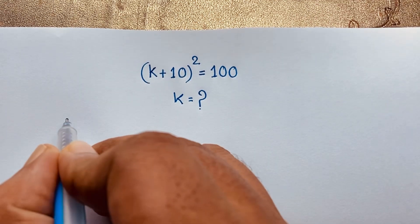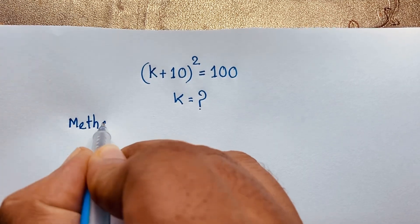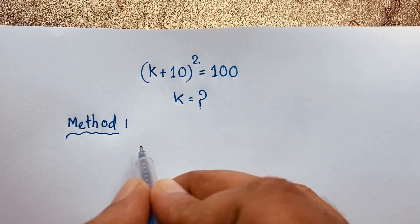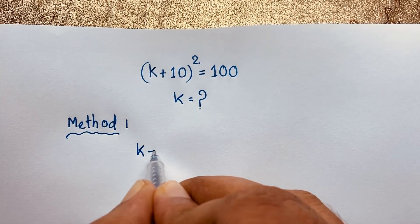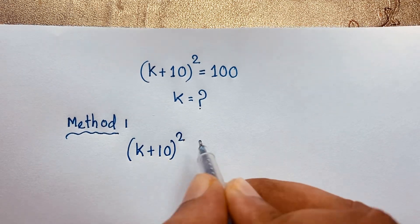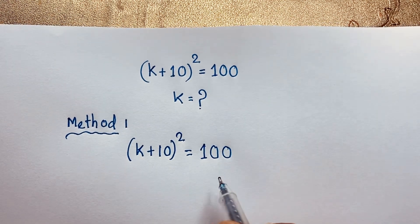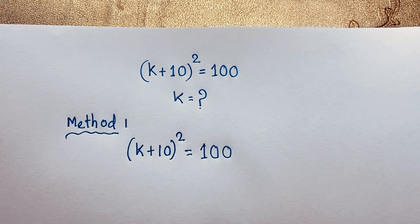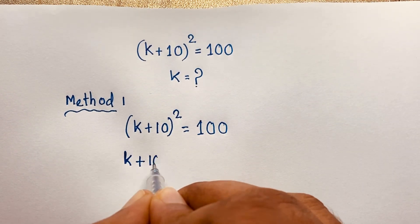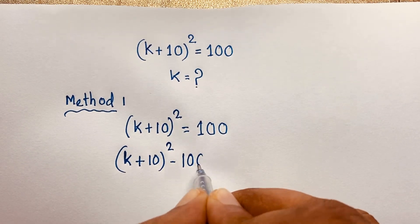I will solve this question using 3 methods. Method 1: our question is (k + 10)² = 100. I move 100 to this side, it will be negative. So it becomes (k + 10)² - 100 = 0.